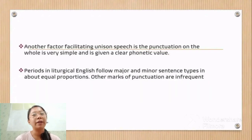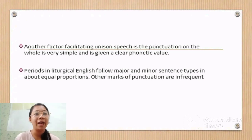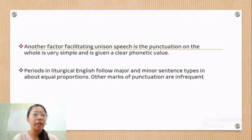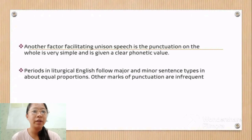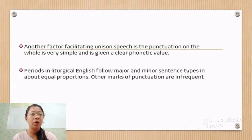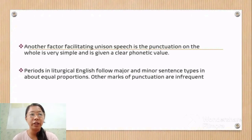Another factor facilitating unison speech is the punctuation. On the whole, it is very simple, and it is given a clear phonetic value. This emerges if one compares the phonetic marks in the above text based on a tape recording of the service, with the graphological marks in the text which the congregation was reading. There is an almost complete coincidence of the periods with major pauses and commas with brief pauses, and there is little variation in the length of pauses of both types throughout any given text. Perhaps the most interesting thing is the way in which the phonetic criterion dominates the grammar.